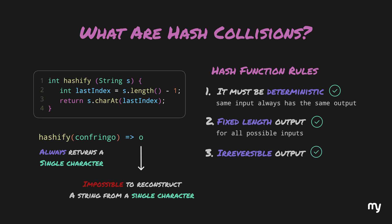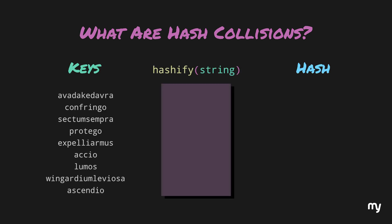Now, an important point to be noted about this hash function is that there could be a lot of possible inputs which could yield the output o. It means confringo, protego, accio, ascendio, and every other string ending with o will have the same output, that is lowercase o.